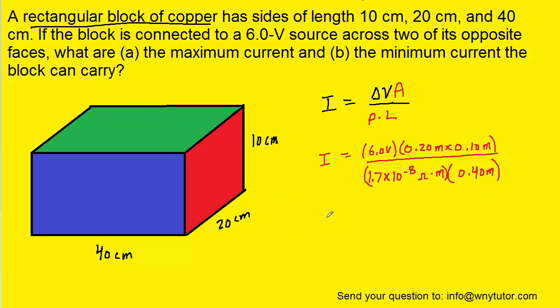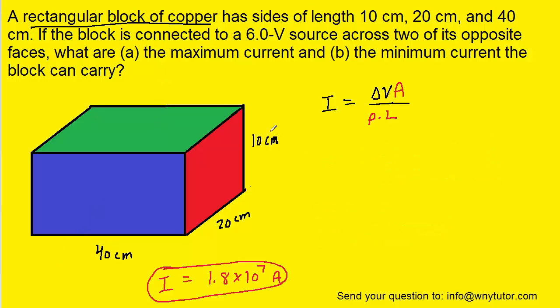So now we can pick up our calculators and determine the current here. And when we do that we get 1.8 times 10 to the seventh approximately amps. The unit of current is amps. So we're going to hang on to this result and then we're going to do two more calculations. One for the green side and then one for the blue side.